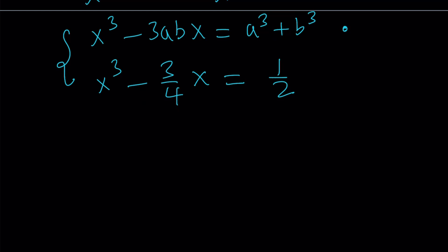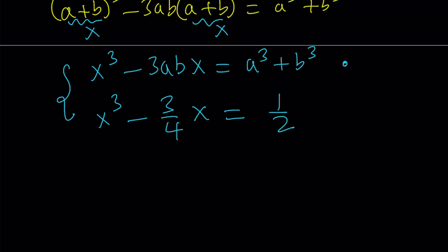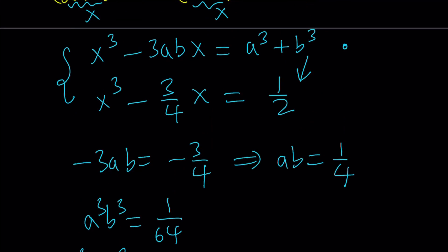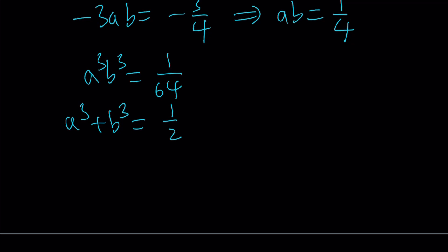So let's go ahead and proceed for solving this equation. So this gives me negative 3ab equals negative 3 fourths. And from here, we get ab equals 1 fourth. And by cubing both sides, we get a cubed b cubed equals 1 over 64. I do need to cube both sides, because I want to use the sum of cubes. And a cubed plus b cubed is basically equal to the constant on the right hand side, which is 1 half. So this gives me a system of equations.